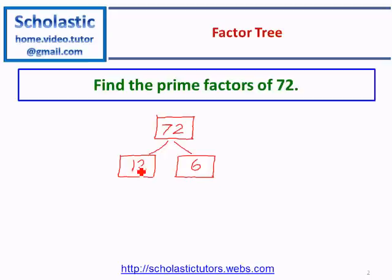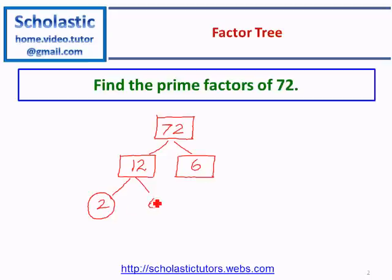We'll try to find factors for 12, so it can be 2 times 6. The number 2 is a prime number, so we put a circle around it. The number 6 is again a composite number, so we put a rectangle around that number.